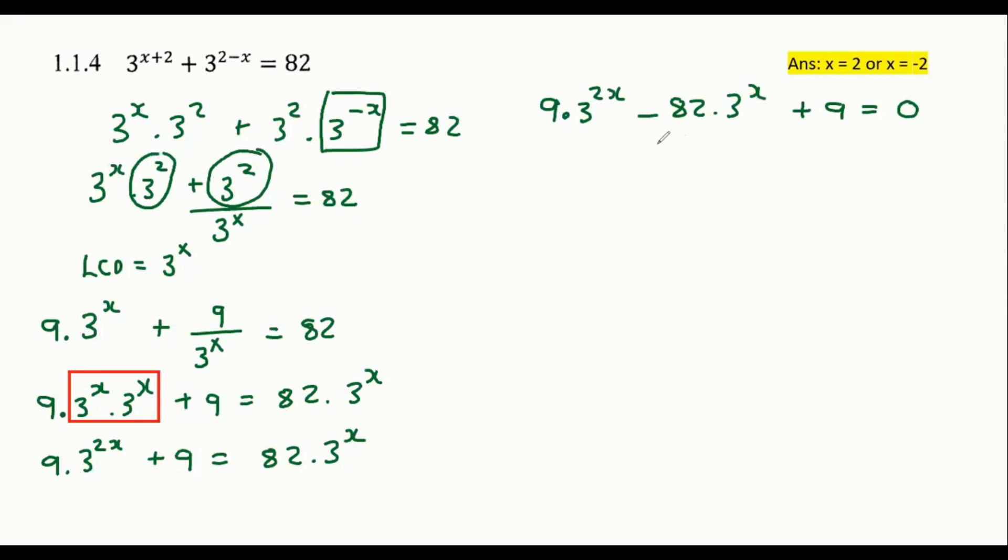So what happens now is that we're obviously going to use the K method now. Here we go with the K method. So we are going to let this part over here equal to K, but first I just want us to quickly rewrite this part here as three to the X in brackets squared. It's the same thing. This and this, it's the same exact thing.